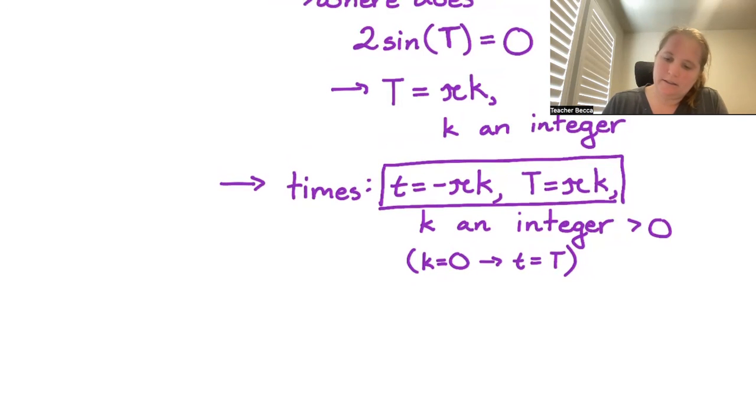So at capital T, we're at t = πk, k a positive integer.